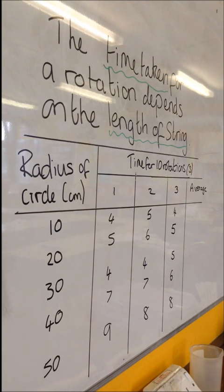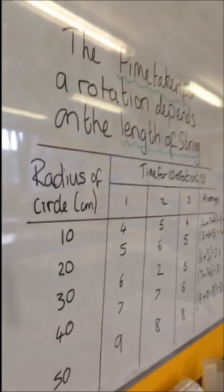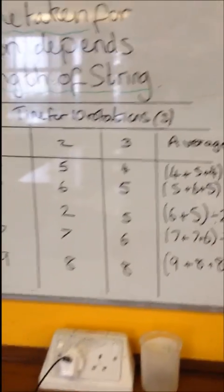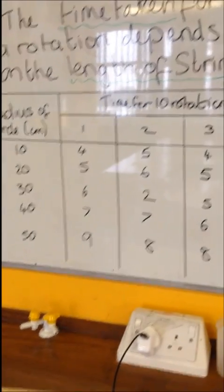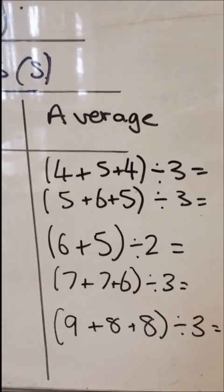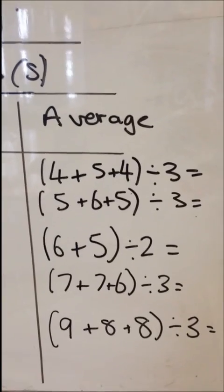So these are my results. What I need to do now is to work out an average. So the way that you work out an average is you add the numbers together and you divide them by the number that you have. So to work out the average for the first experiment, I've got 4, 5 and 4. So I need to do 4 plus 5 plus 4 equals on your calculator, because sometimes calculators won't work properly if you don't do it like that, and then divide it by 3.